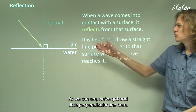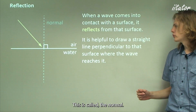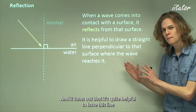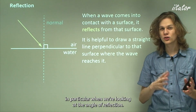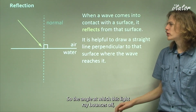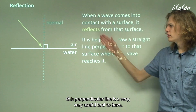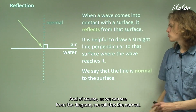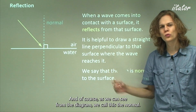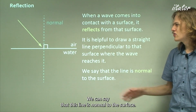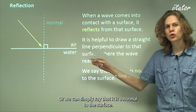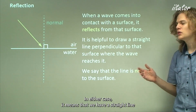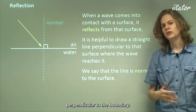We have a little perpendicular line here called the normal, and it's quite helpful to have this line. In particular when we're looking at the angle of reflection — the angle at which a light ray bounces off — this perpendicular line is a very useful tool. We call this the normal, meaning it is a straight line perpendicular to the boundary.